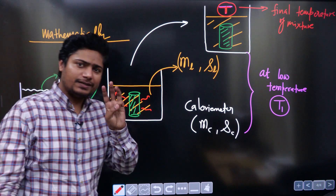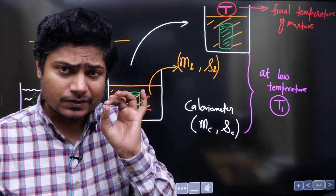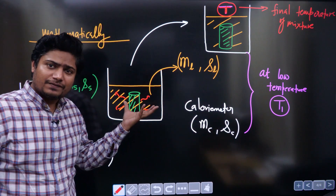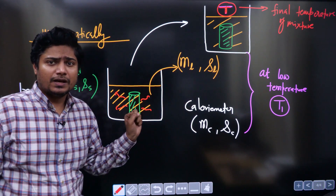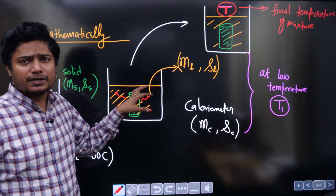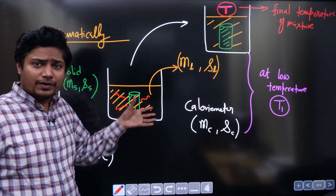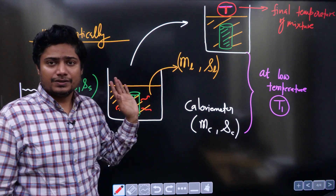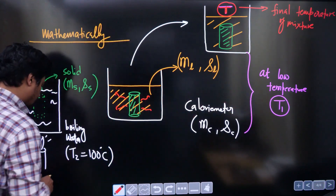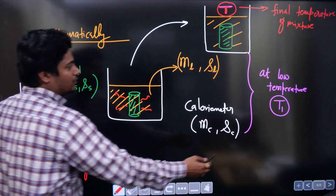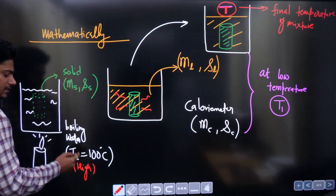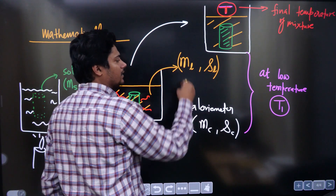Generally the calorimeter and liquid have different specific heats. The solid is at higher temperature, generally 100 degrees. So you have three temperatures: T1 is the low initial temperature of both the calorimeter and liquid, T2 is the high temperature of the solid, and T is the final mixture temperature.